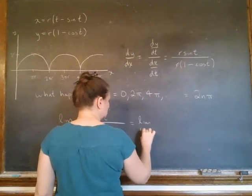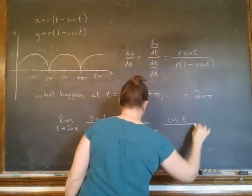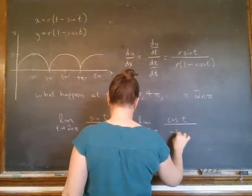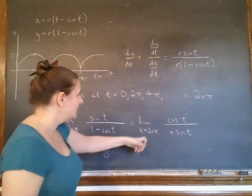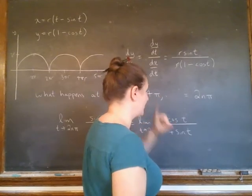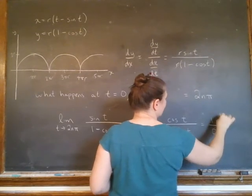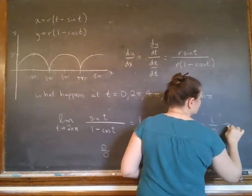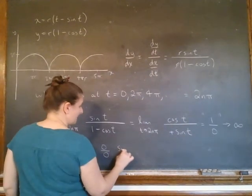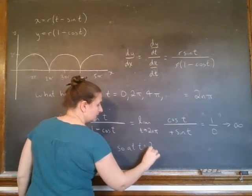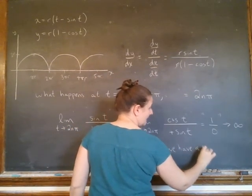So cosine goes to cosine, this would be plus sine t, fine, whatever. But now what's going to happen, this 2m pi, cosine of 2m pi is 1, and sine of 2m pi is 0. So this is like 1 over 0, and I hate to write that because that's not anything really. What this is, is going to infinity. So which tells me, at t equals 2m pi, we have a vertical tangent.